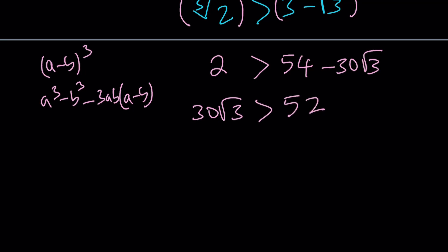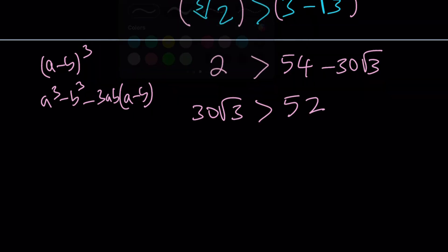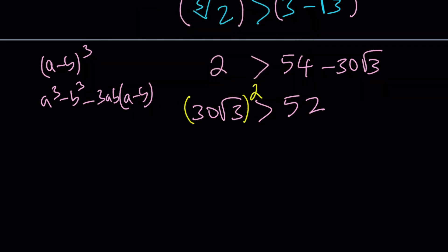And then, I'm going to go ahead and square both sides. Because I got rid of the cube root, now I want to get rid of the square root. Let's go ahead and square both sides. That's going to give us. Now, how do you square 30 root 3? That's going to be 900 times 3, which is 2,700. And then, if you square 52, you're going to get 2,704. Uh-oh.